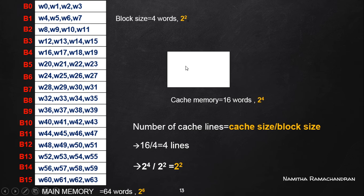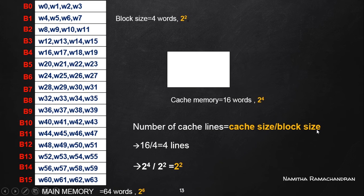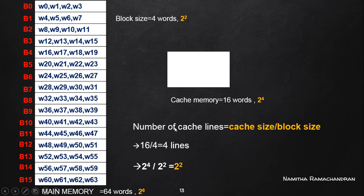The task is to find how many cache lines are possible in this cache memory. The cache memory capacity is 16 words and each cache line has a size of 4 words. The number of cache lines equals cache size divided by block size, which is 16 divided by 4, giving us 4 cache lines.